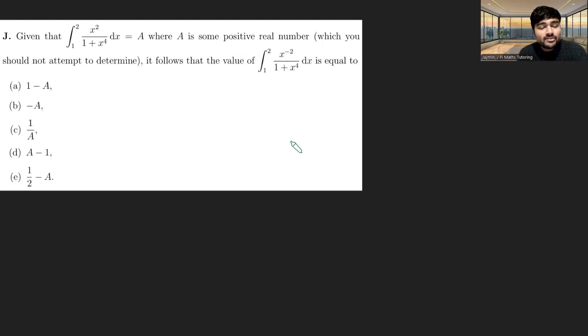We're given that the integral from 1 to 2 of x squared divided by 1 plus x to the 4 dx equals a, where a is some positive real number which we're told we shouldn't attempt to determine.